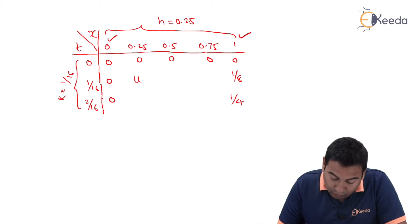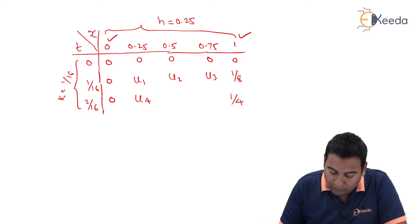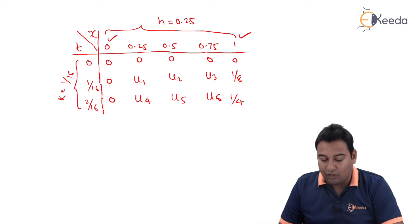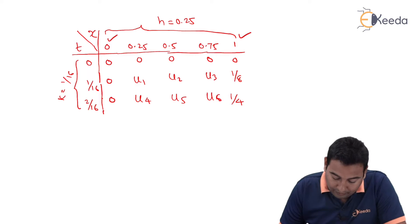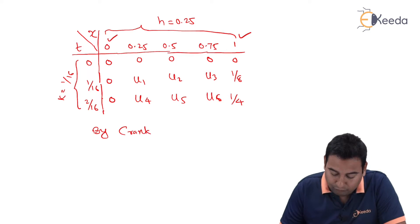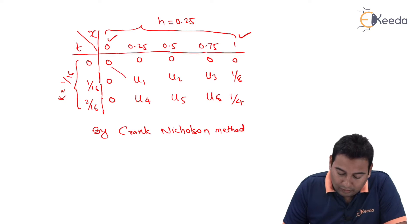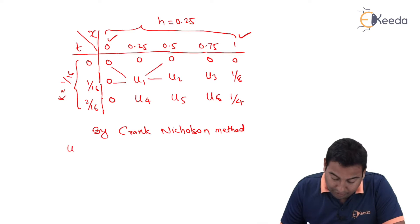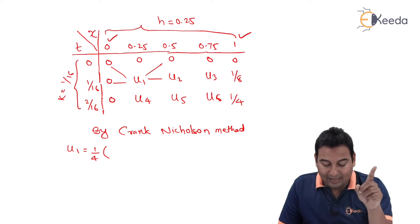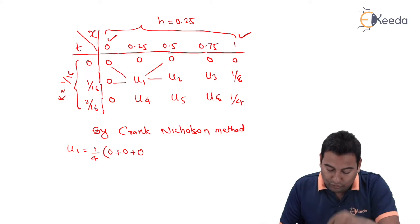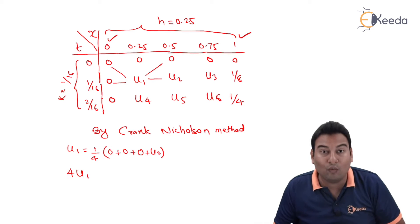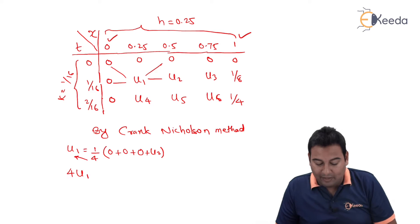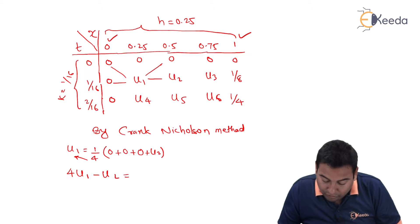We need to complete this table. The unknowns are u1, u2, u3, u4, u5, and u6. Let us start the solution. For u1 by the Crank-Nicolson method: u1 = (1/4)(0 + 0 + 0 + u2). Cross-multiplying gives 4u1 − u2 = 0. This is equation number 1.